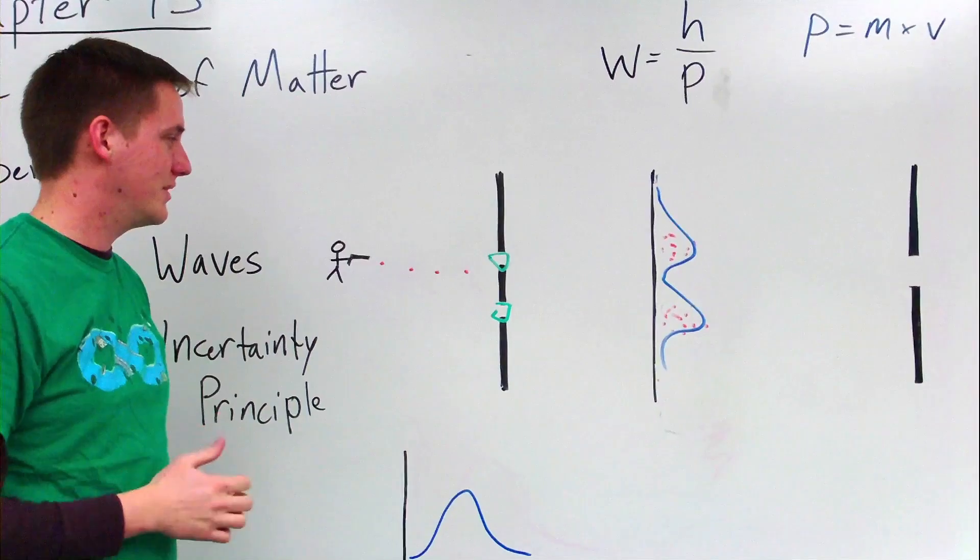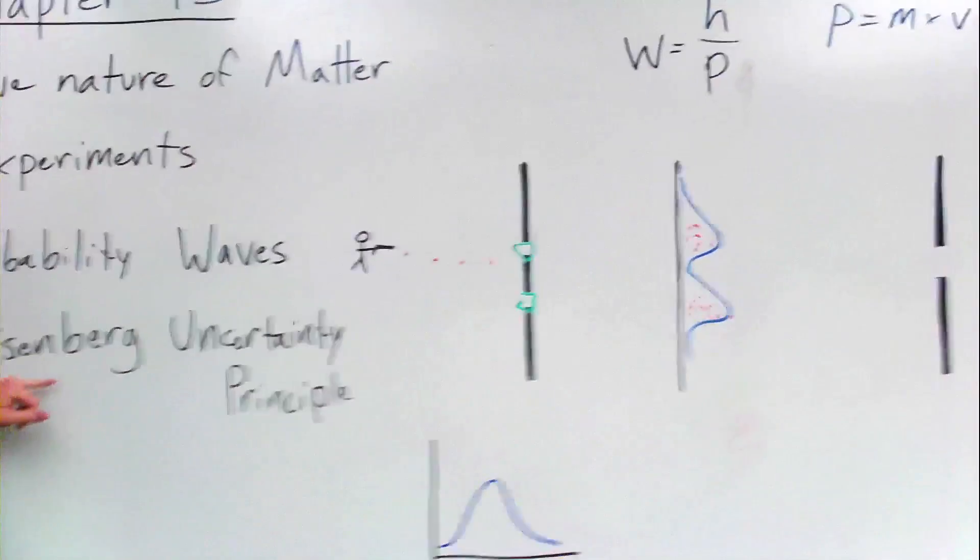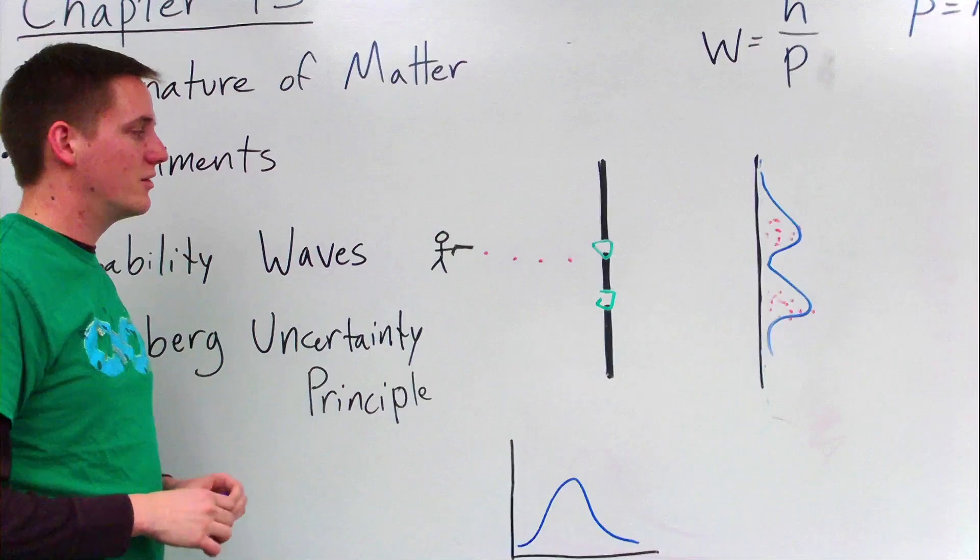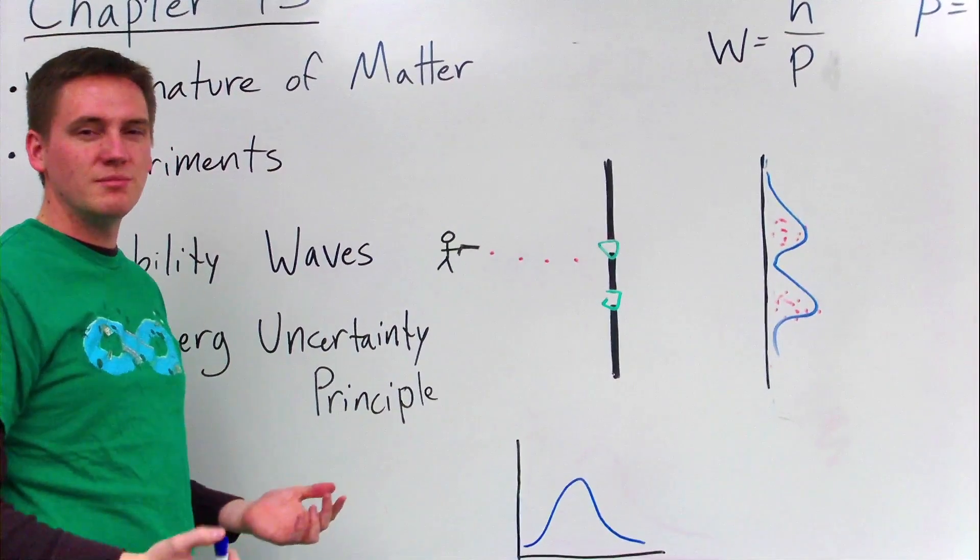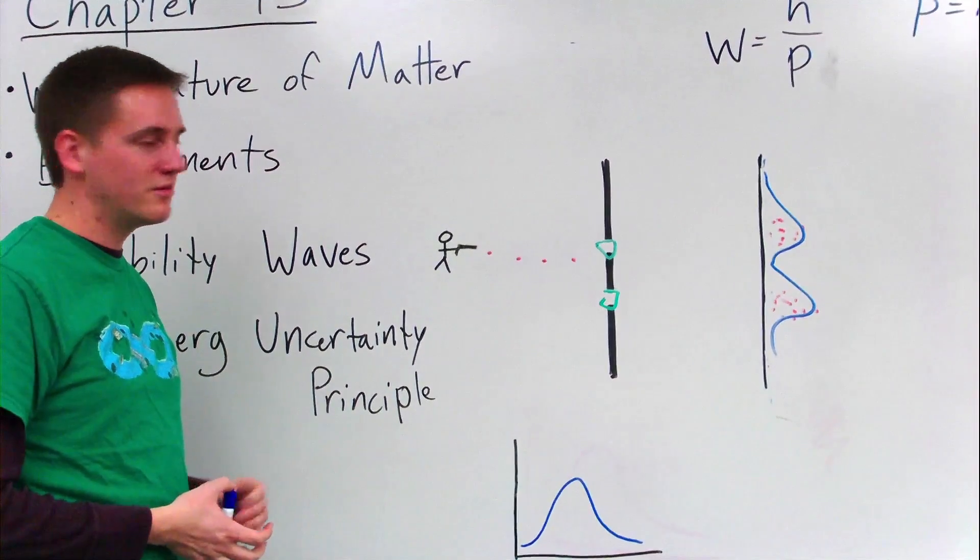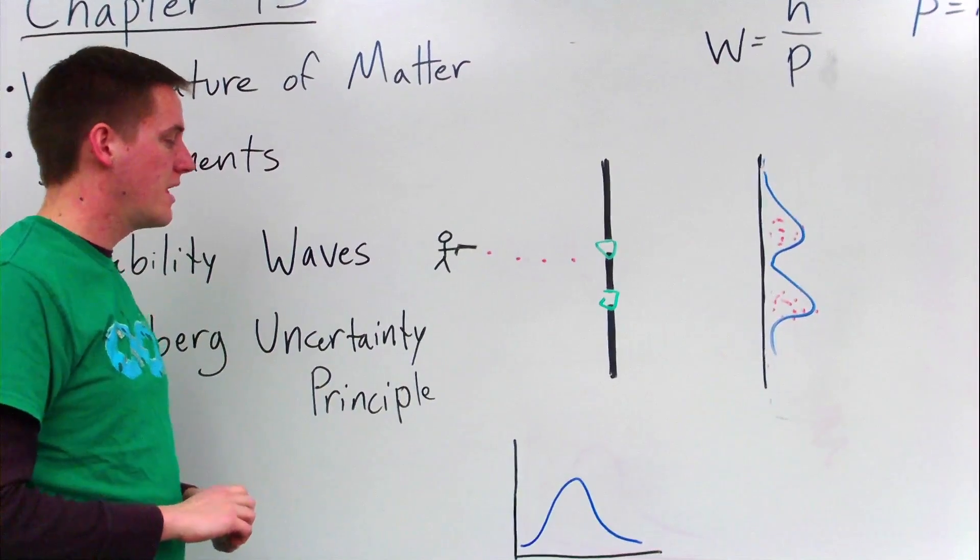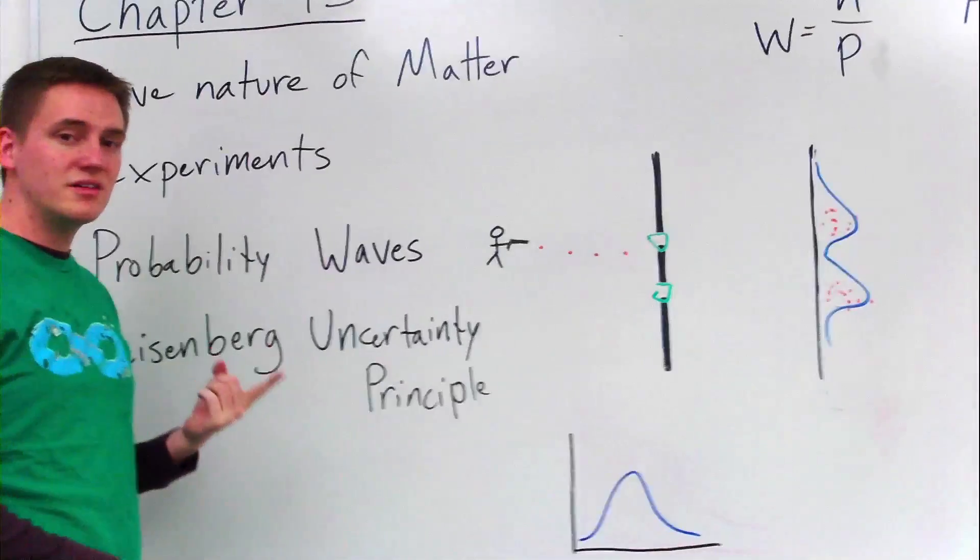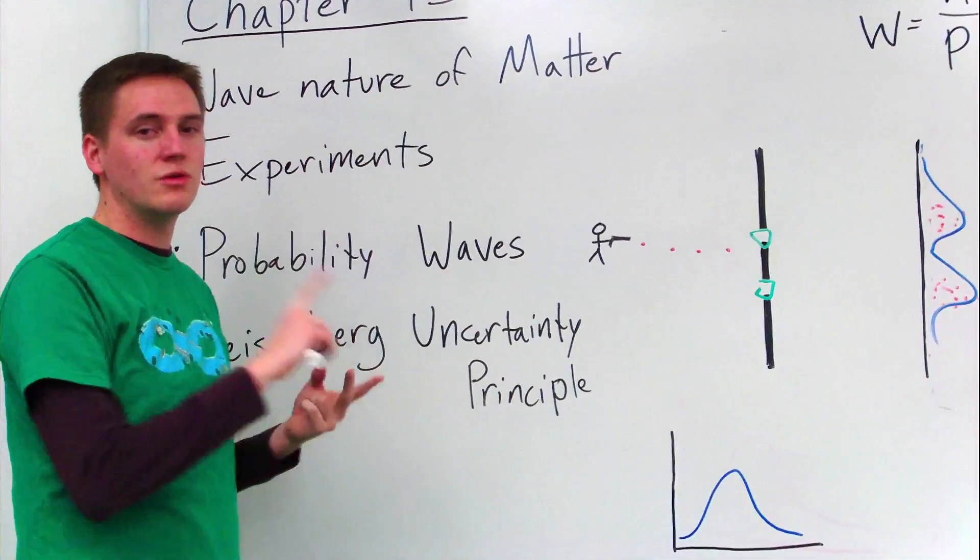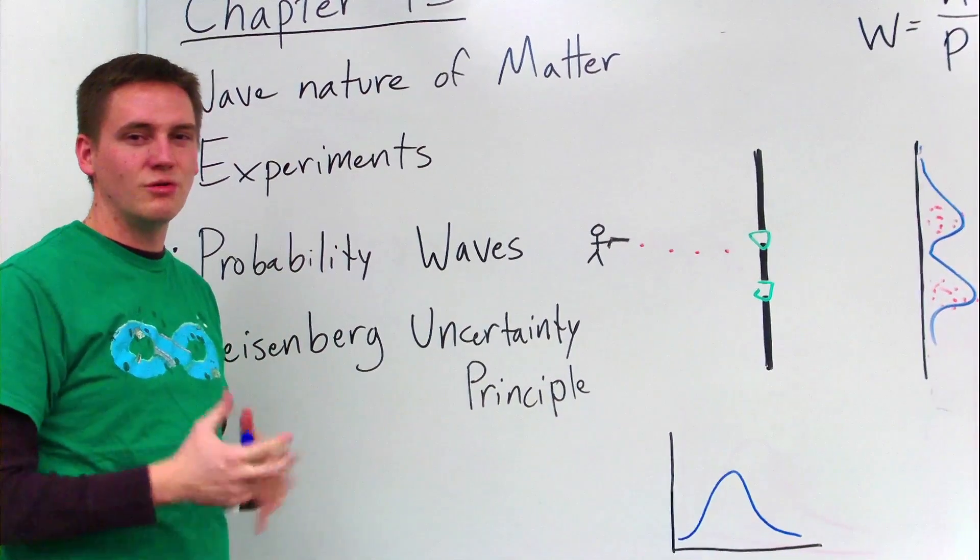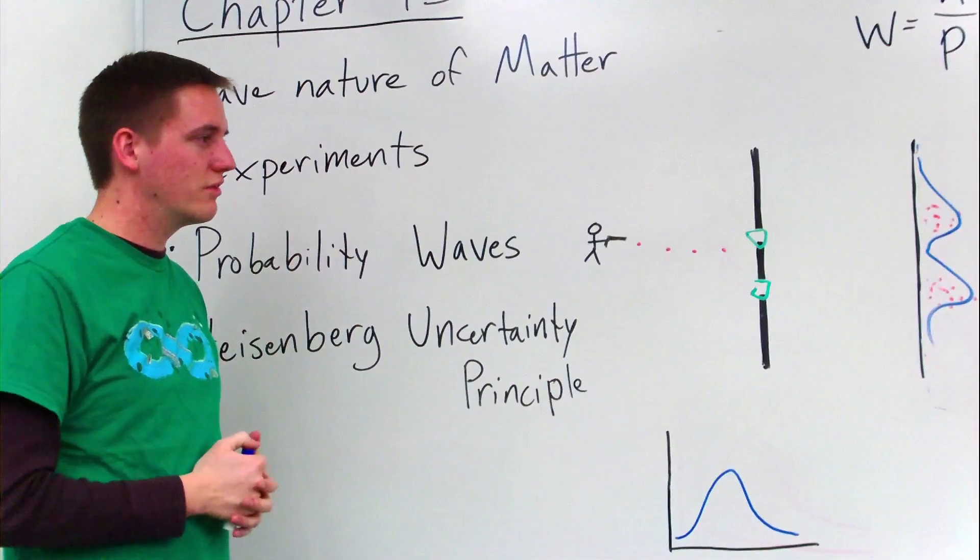The next thing I want to talk about is the Heisenberg uncertainty principle. This talks about the momentum or speed of objects like electrons compared to their position. And the uncertainty principle says we can either know a lot about their position or know a lot about their momentum or movement, but we can't know a lot about both of them. It's kind of one or the other.